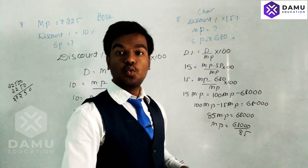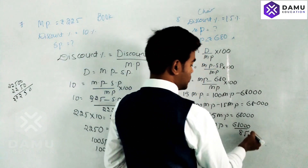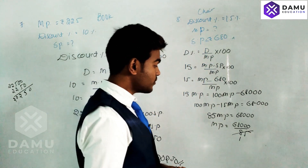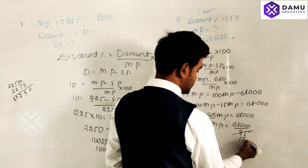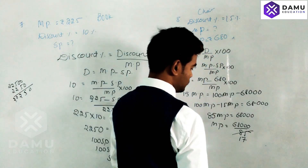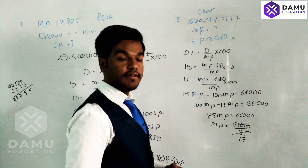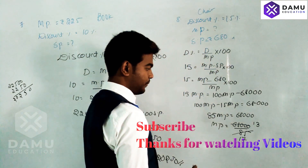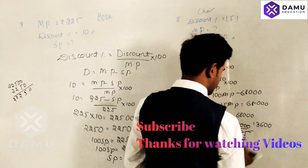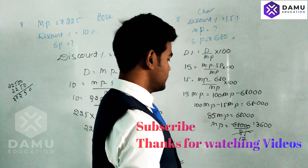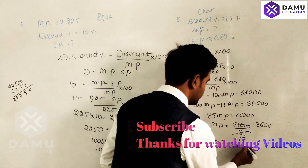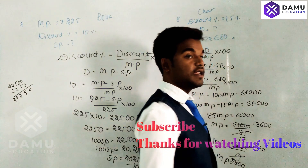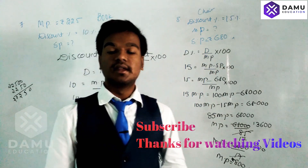We can simplify 68000 divided by 85 by dividing both by 5, giving 13600 divided by 17. Dividing: 17 times 800 equals 13600. So market price equals 800 rupees. The market price of the chair is 800 rupees. Thanks for watching our videos — please click the bell icon and subscribe.